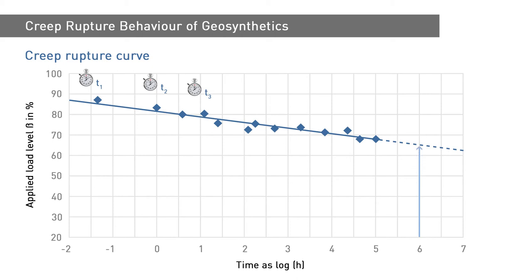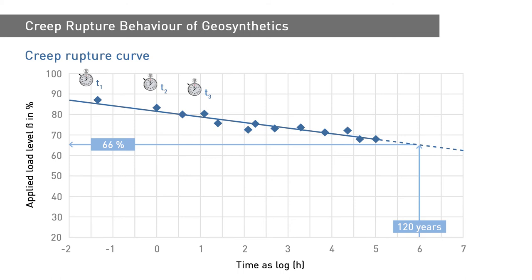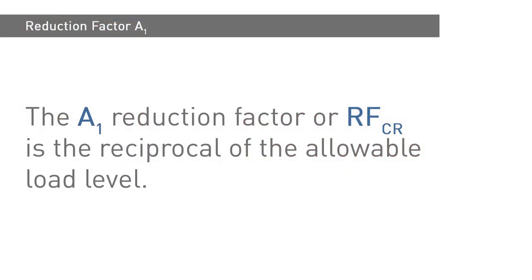The maximum allowable load level for the projected design life can then be determined as the intersection of the chosen time with the best-fit line. As this example shows, the allowable load level for a 120-year design life is equal to 66% of the short-term strength. The A1 reduction factor, or RFCR, is then given as the reciprocal of the allowable load level.